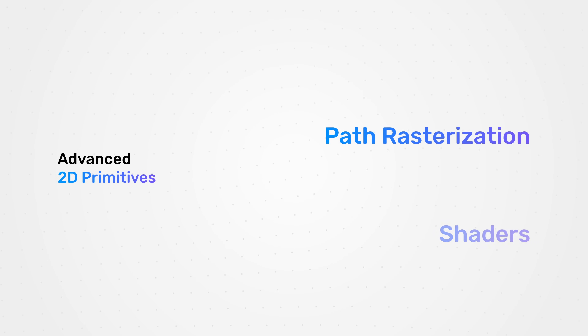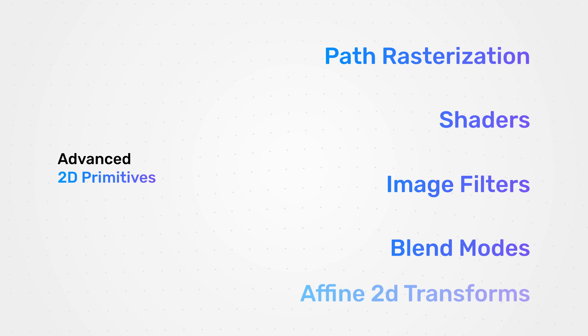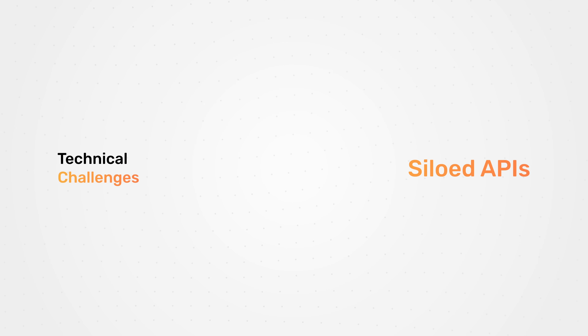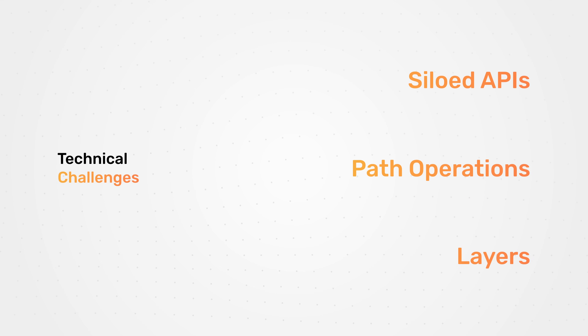By breaking down the silos between the different graphic APIs and offering a nice composable API — let's have a look at how we're even doing this. Web browsers have some of the most sophisticated 2D engines you'll find, and Skia has a large portion of that market share. The question is, how much of these best-of-class capabilities are available to us developers? Some capabilities are exposed: path rasterization, shaders, image filters, blend modes, affine 2D transformations. And other capabilities are a challenge — the APIs are siloed from each other, for instance shaders and image filters.